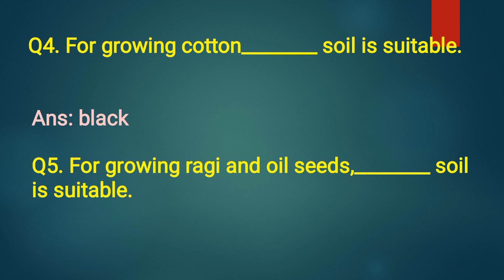Question number five, for growing ragi and oil seeds, dash soil is suitable. Answer, red. For growing ragi and oil seeds, red soil is suitable.